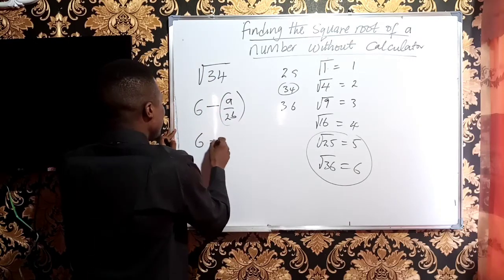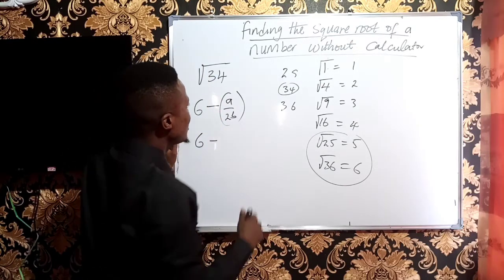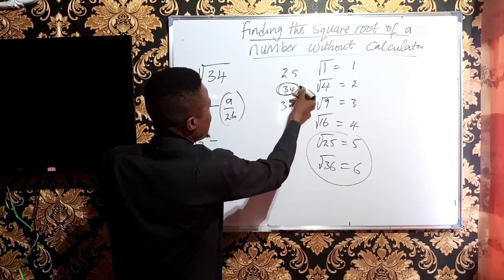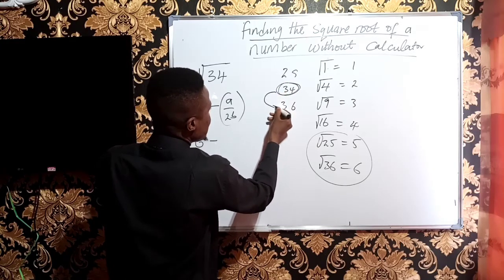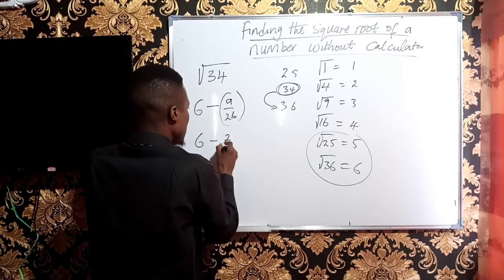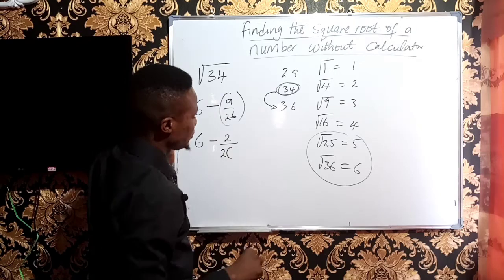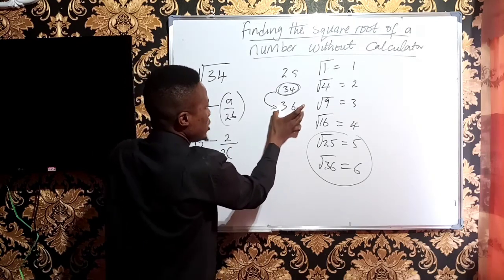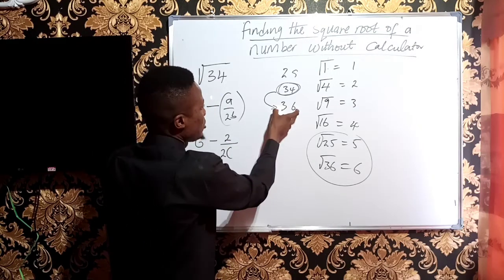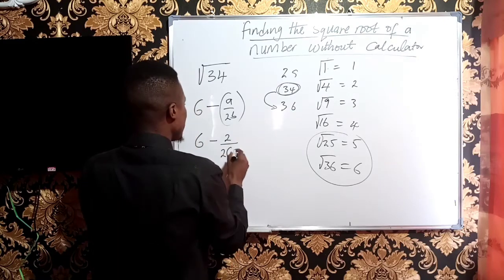So I will have 6 minus... What is your a? The number given to me is 34. The difference between 34 and 36 I have used is just 2, over 2b. What should be the b? The square root of the value you've used is the b. The square root of 36 is 6, so 6 is serving as your b.